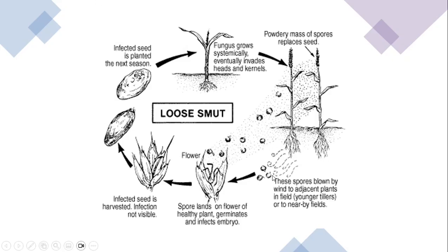Seeds carry chlamydospores internally. The fungus grows systemically, moving into the vasculature of the plants and invading the heads and kernels, where a powdery mass of spores replaces the seed. In the head, these spores are blown away by wind to adjacent plants and younger tillers of nearby plants in the field. The spores land on the flowers of healthy plants, germinate on the stigma, infect the embryo, and infected seed is harvested again with no visible infection — and this cycle starts again.